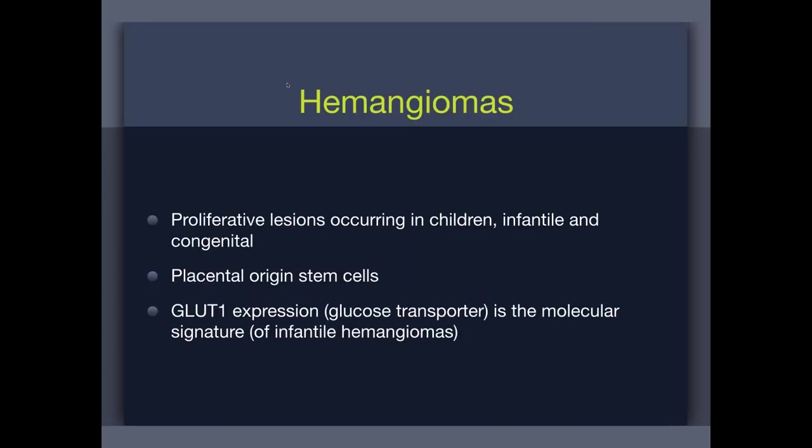Let's talk briefly about hemangiomas to give you a very clear understanding. Hemangiomas — also known as infantile hemangiomas — occur in infants between zero and 12 months of age. They're proliferative lesions because they're vascular tumors. If you take them out and look at them, they express GLUT1, a glucose transporter — that's the hallmark molecular signature of infantile hemangiomas. They are in fact the most common tumor of infancy. They proliferate over the first six months of life and then start to involute.